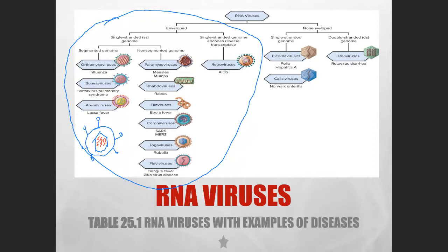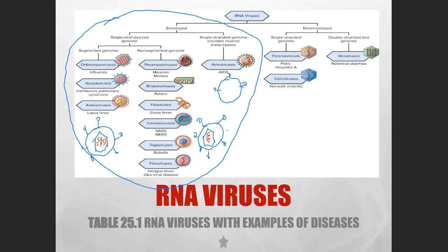The second group is enveloped, non-segmented, single-stranded RNA. It has a spike, a capsid, and because it is non-segmented, there is only one segment of single-stranded RNA inside. The next one, which we will discuss in this lecture, is HIV or retroviruses. Its structure has an envelope, spike, capsid, and it actually carries two segments of RNA.